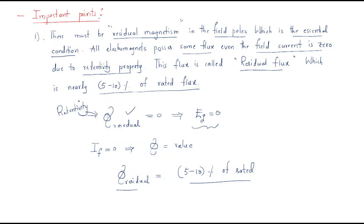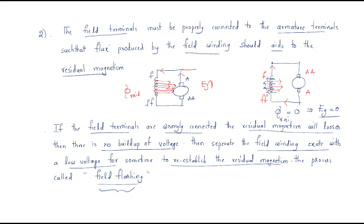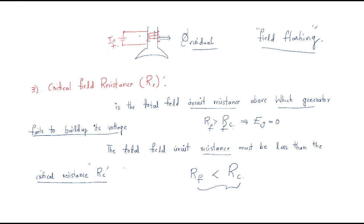In this session, we discuss important points regarding the self-excited generator. We already covered the first point — residual magnetism — and the second point — field flashing. Whenever the residual magnetism becomes zero, we give a small DC excitation to the winding, then the residual magnetism will be recovered. That is called field flashing.